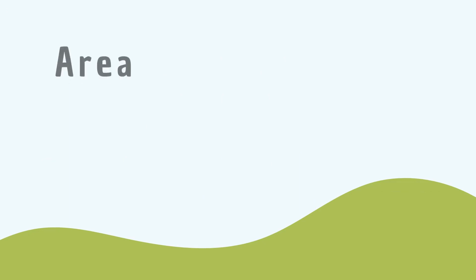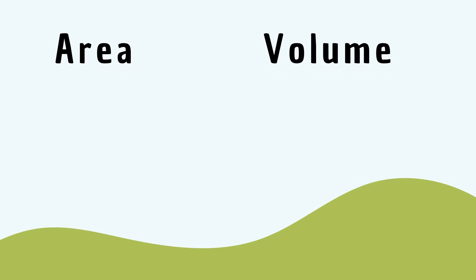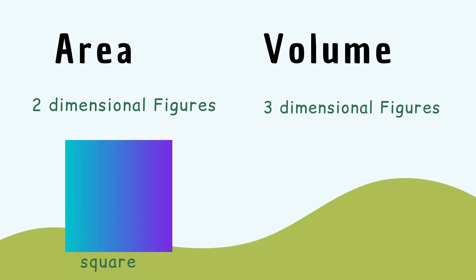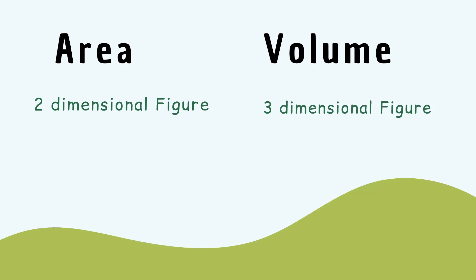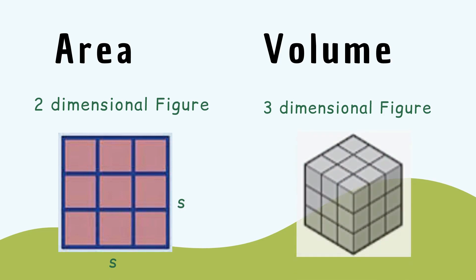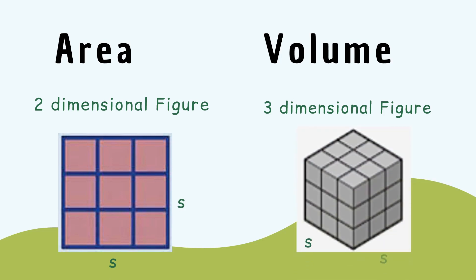We can derive the formula for the volume of a cube from the formula for finding the area of a square. In area, the figures are two-dimensional, and in volume, the figures are three-dimensional. A square and a cube are related because of the same measurement of their sides. These are the two dimensions of a square, and these are the three dimensions of a cube.